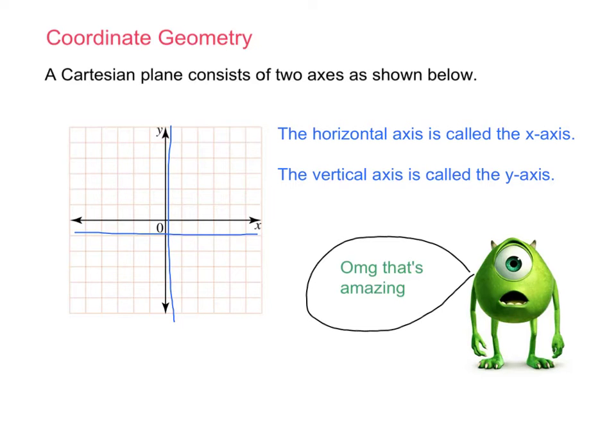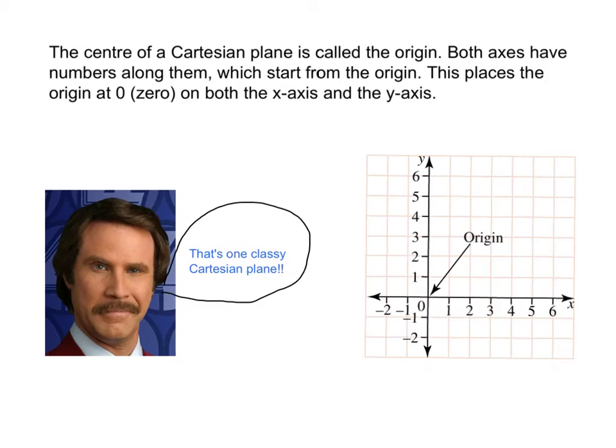So, what is a Cartesian plane and what does it actually mean? The center of the Cartesian plane, so this guy over here, right in the center there, that point where it crosses into a T, it's called the origin. It's the origin point. It's the start of your Cartesian plane. It's your point of origin, the point where you start.